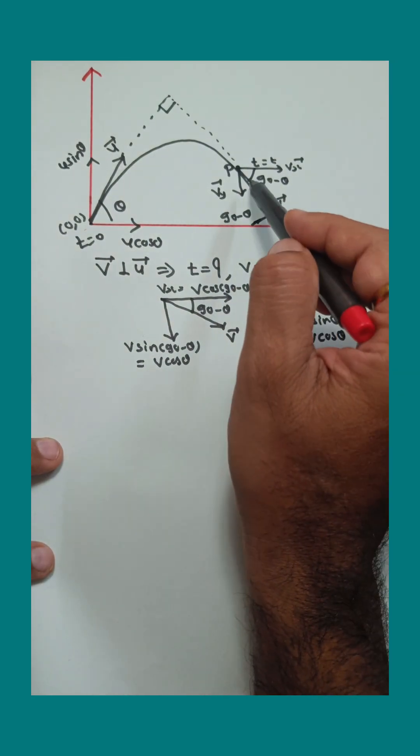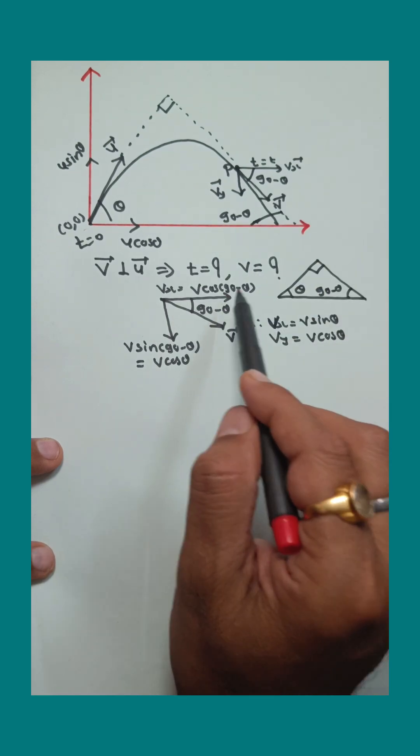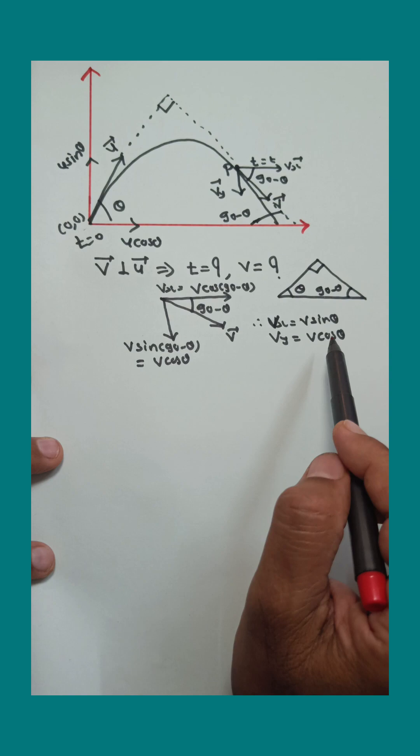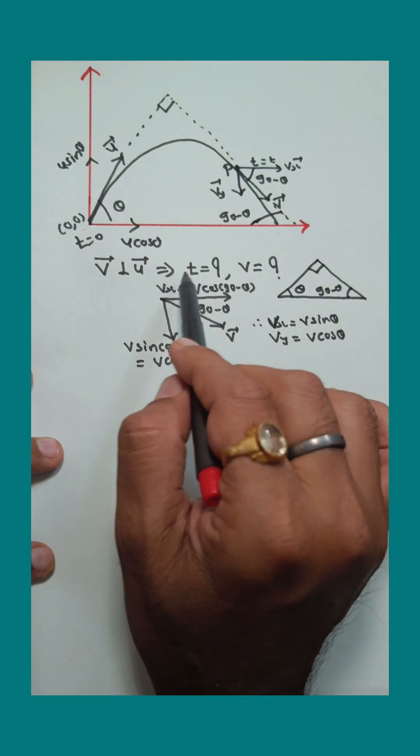There are two components of v: v cos(90° - theta), which means v sin theta, and the y component is v sin(90° - theta), which means v cos theta. Now we want to find t and v here.